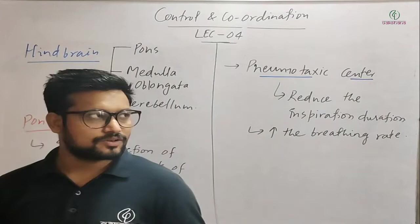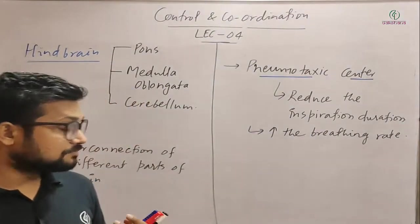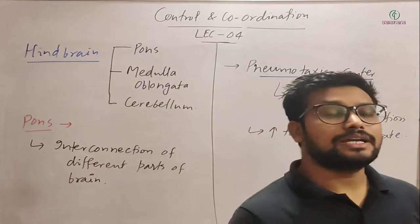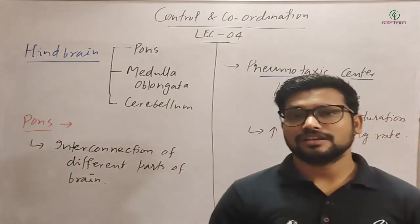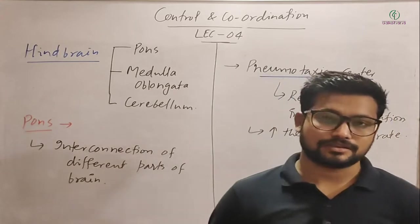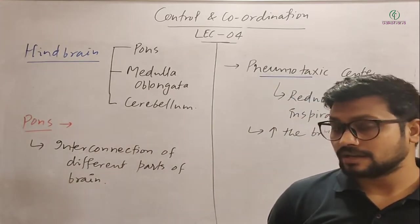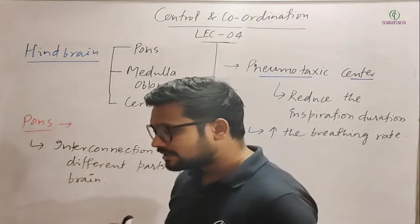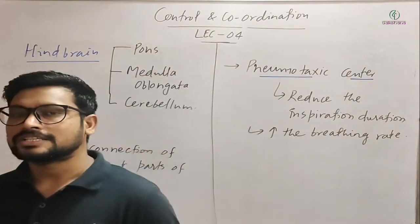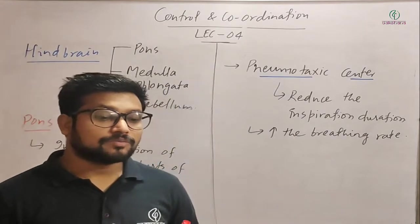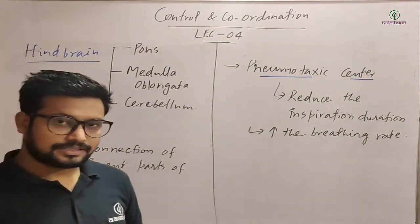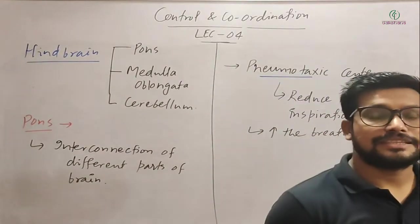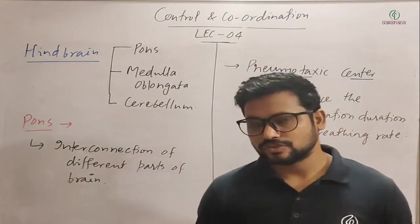So to summarize pons: it is a word of Latin language meaning bridge. Its primary role is interconnection between different parts of the brain. It also contains the pneumotaxic center, which reduces the inspiration duration and increases the breathing rate.